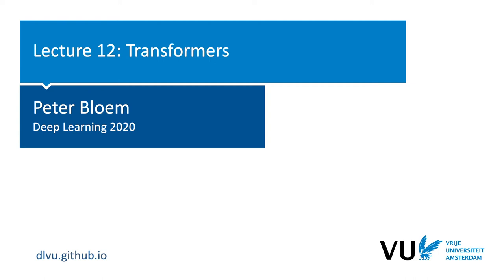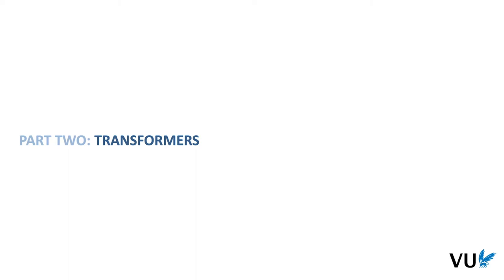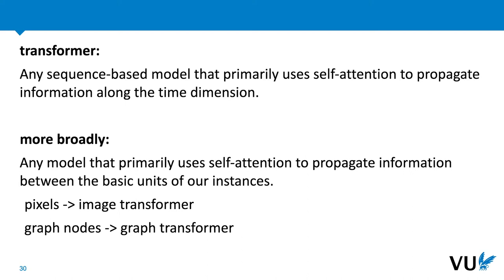In the previous video, we saw the self-attention layer. To get from a self-attention layer to a full-fledged model, we need to repeat it a number of times in a controlled fashion. If we do that, we get what's called a transformer model, and that's what we will be talking about in this video. We'll define a transformer model as any sequence-based model that primarily uses self-attention to propagate information along the time dimension.